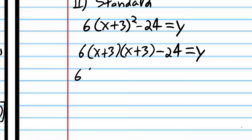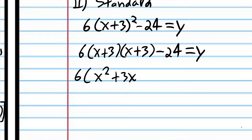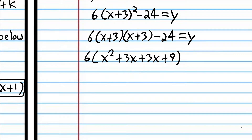To expand it, we're going to use FOIL. x times x is x squared; x times 3 is 3x; 3 times x is 3x; and 3 times 3 is 9. So: F is x times x, O is x times 3, I is 3 times x, and L is 3 times 3. That's the FOIL acronym used in previous classes.